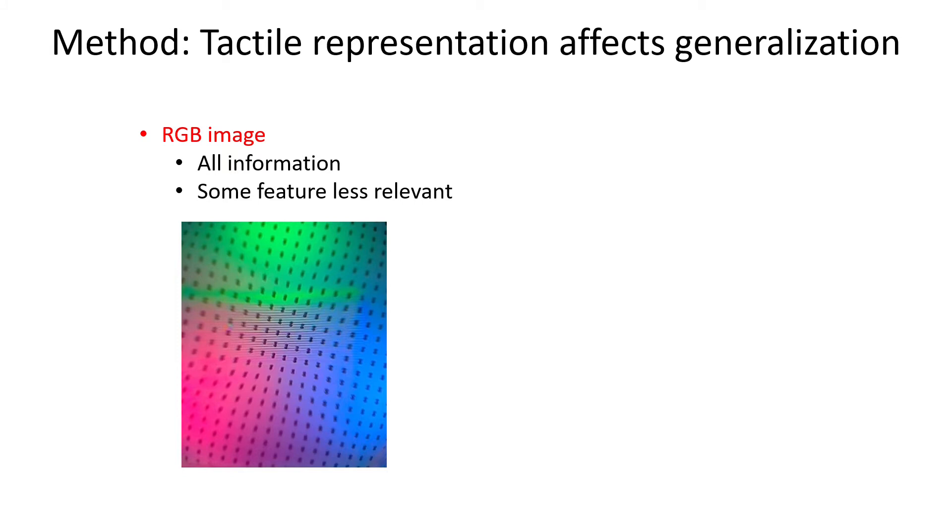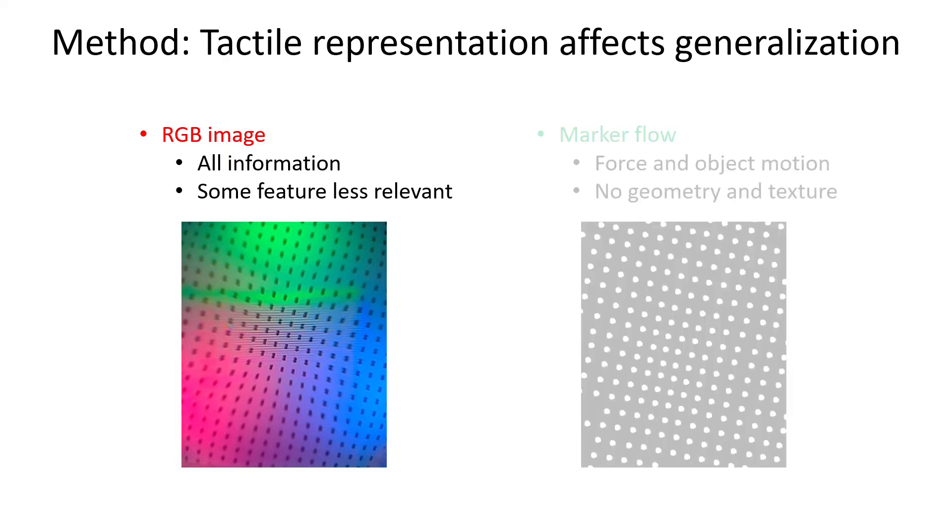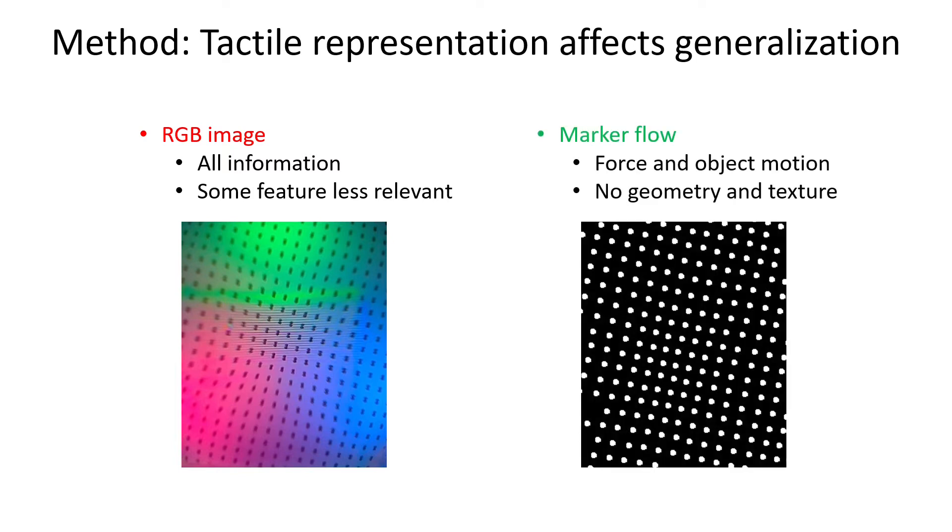Tactile representations affect generalization of the RL policy. We tried both raw RGB image, which includes object information, but some of the features are less relevant to this task, and the marker flow representation, that only has the force and object motion information, and removes the geometry and texture of the object.